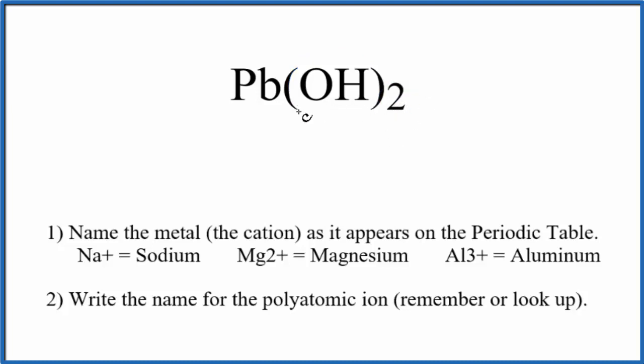We have two hydroxide ions. We also have lead, which is a metal. It's a transition metal, and we're going to have to take that into account when we write the name for Pb(OH)2.